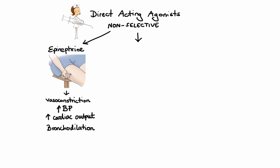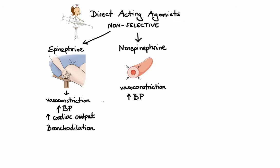What about norepinephrine? Norepinephrine is actually very similar to epinephrine. However, unlike epinephrine, at therapeutic doses, norepinephrine mainly stimulates alpha-1 receptors, which leads to profound vasoconstriction and ultimately increased blood pressure. Norepinephrine has almost no beta-2 activity, which is why it has more limited clinical use in comparison to epinephrine. The only useful indications for norepinephrine are cardiac arrest and hypotensive shock.